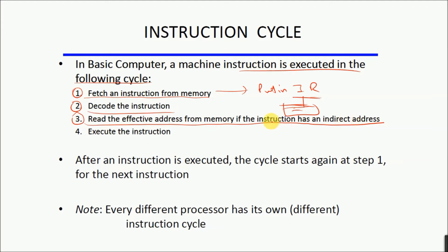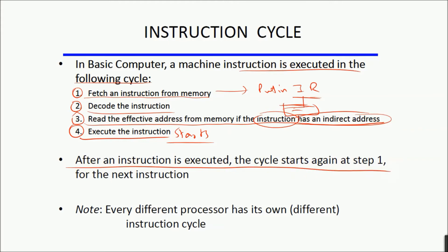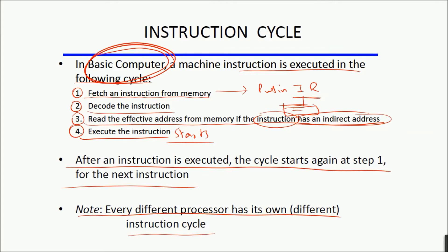At the third step, after decoding, the effective address is read from memory if the instruction has an indirect address; otherwise this third step is ignored. Finally, the decoded instruction is executed. Execution of an instruction is not always done in a single clock cycle — it may require more than one micro operation or clock cycle. After the instruction is executed, the cycle starts again from step one for the next instruction. This cycle is specific to the basic computer; every different processor has its own instruction cycle, but the basic concept is: fetch, decode, execute, write back.